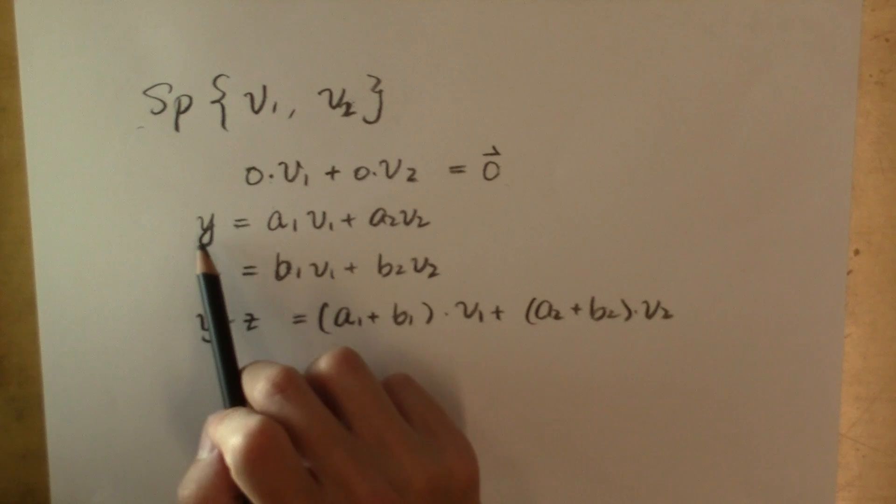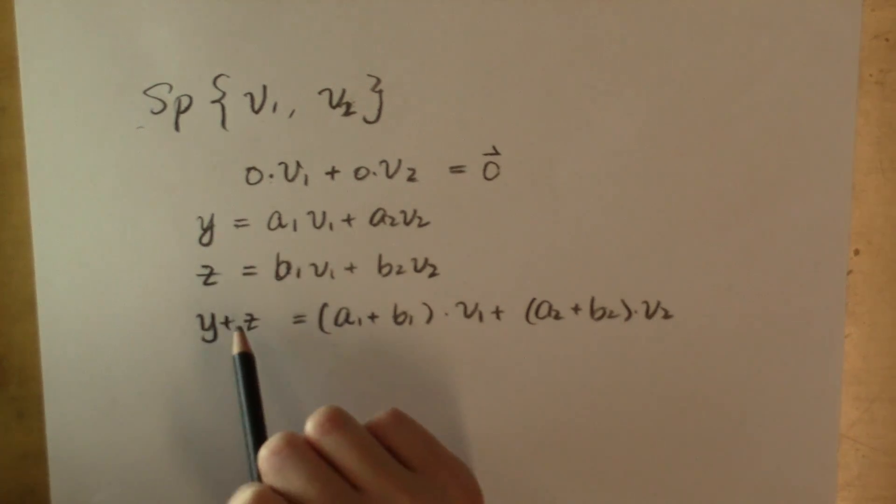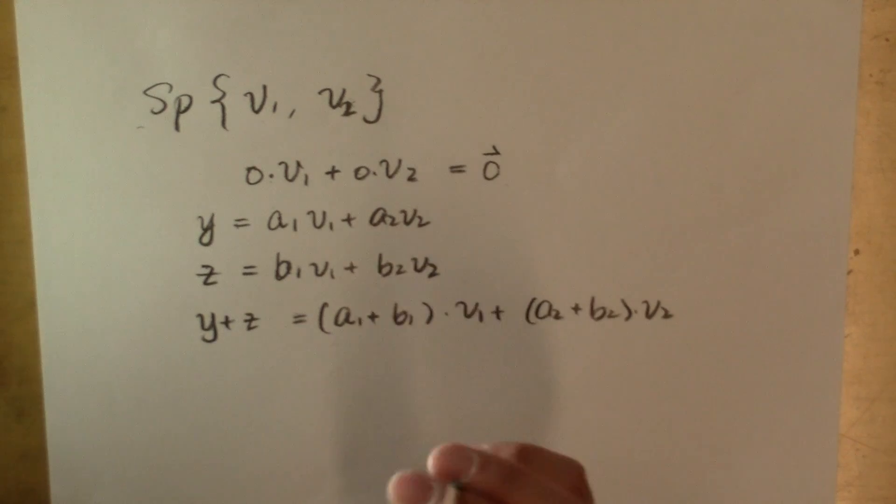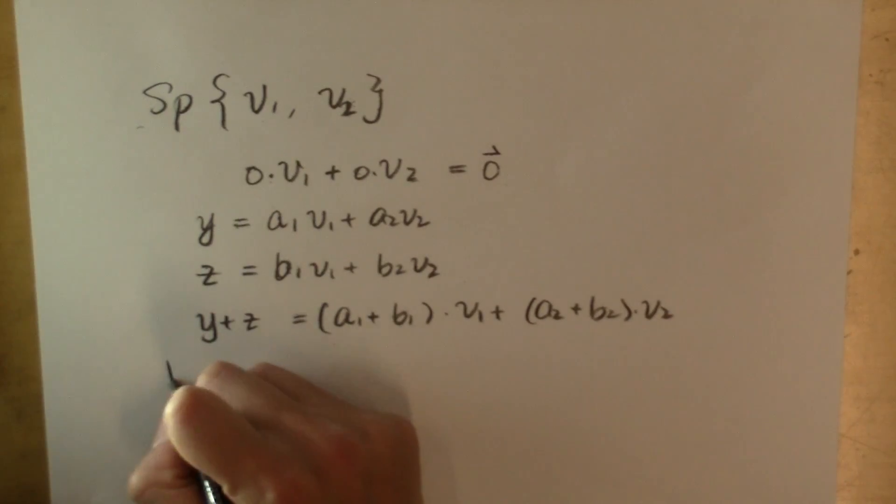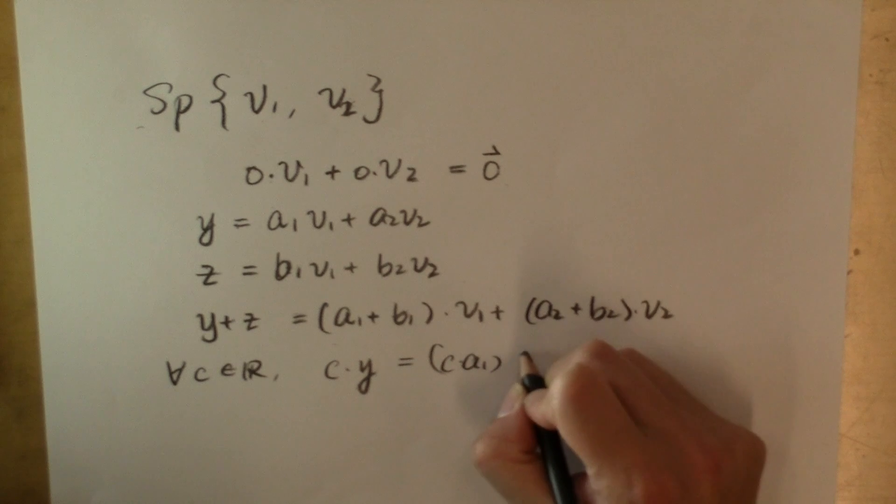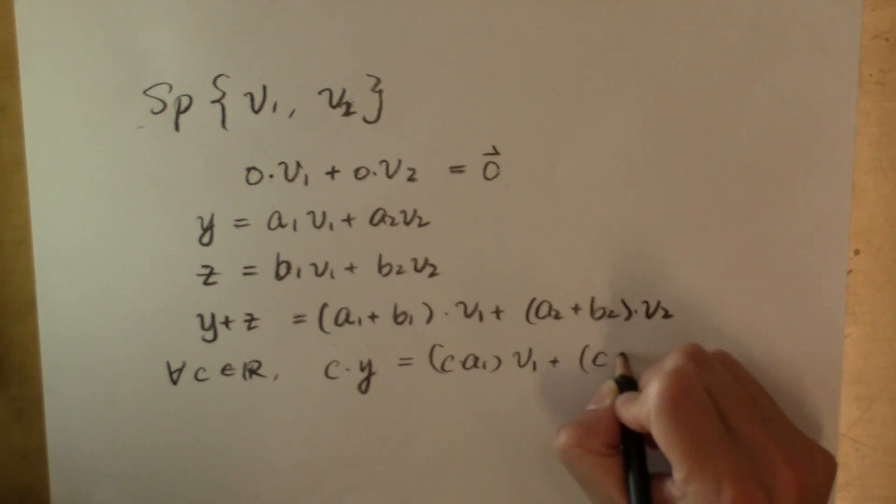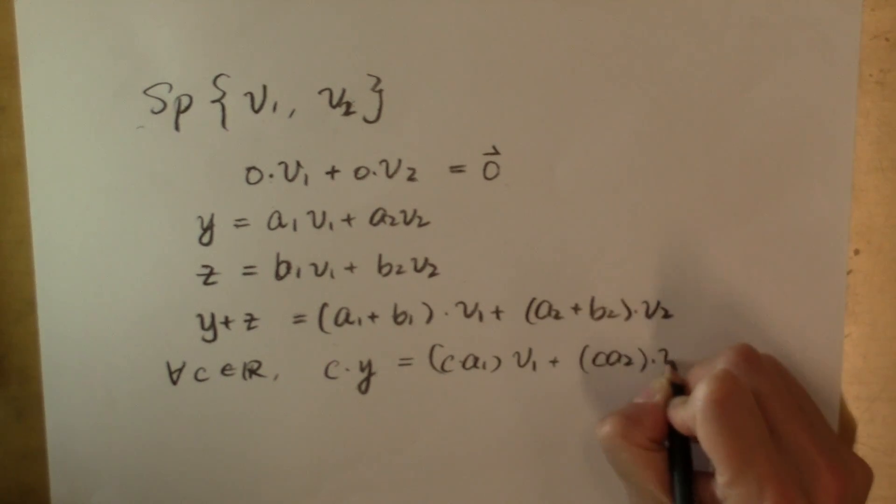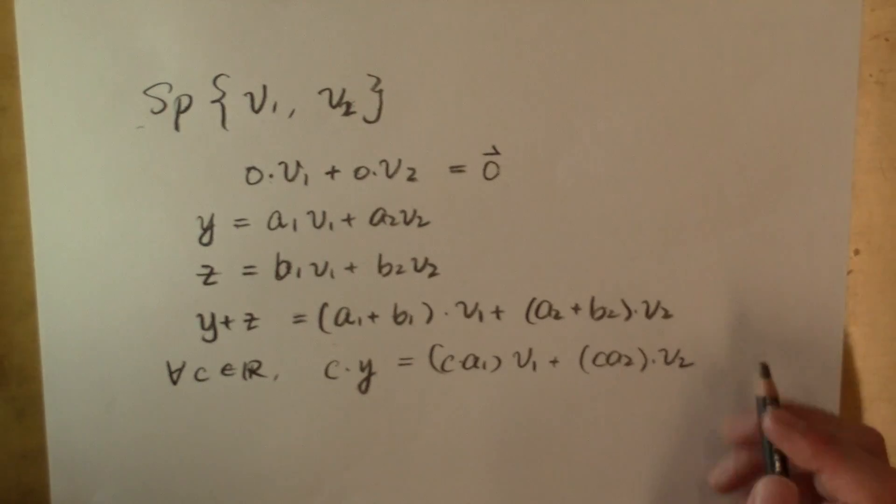I also know that if I stretch y and z in its length or change their directions, the vectors I obtain are still in the span of v sub 1 and v sub 2. So, for any real number c, c times y, which is c times a sub 1 times v sub 1 plus c times a sub 2 times v sub 2, is still in the span of v sub 1 and v sub 2.